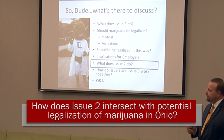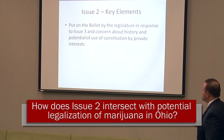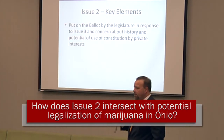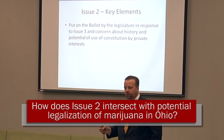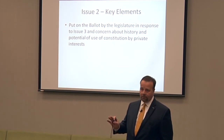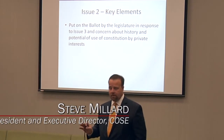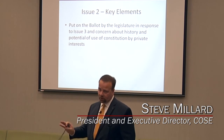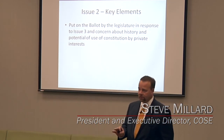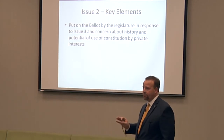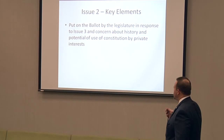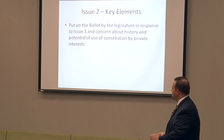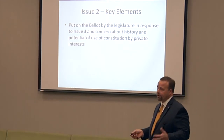So what does Issue 2 do? Issue 2 is a separate issue on the ballot this year, put on the ballot by the legislature. There are two ways something can get on the ballot for a constitutional amendment: it can come from citizens through the process Responsible Ohio used, or it can come from the legislature by a vote to put something on the ballot. They put this on the ballot primarily in response to Issue 3.